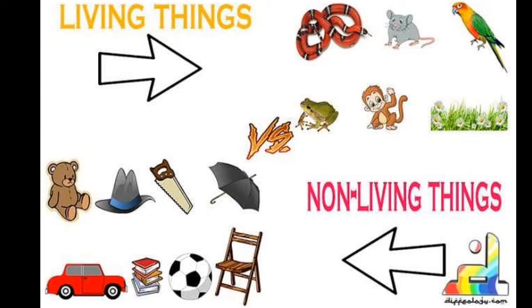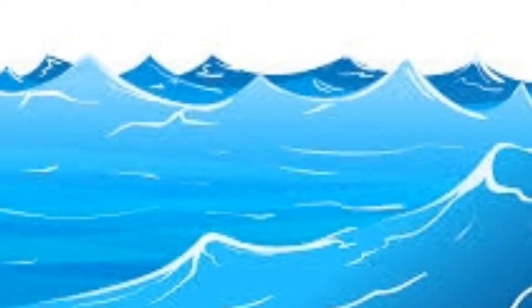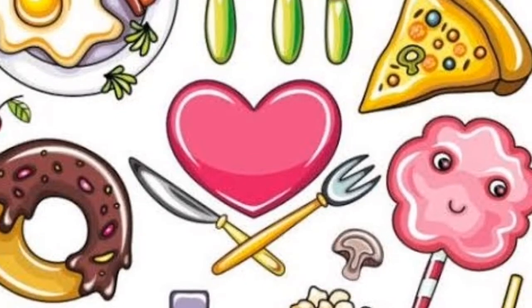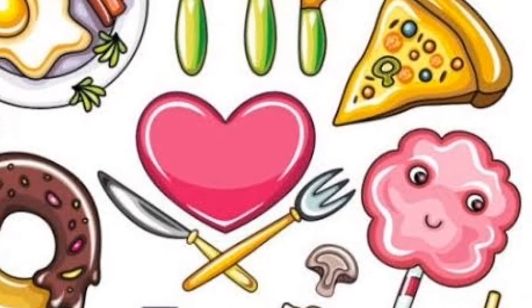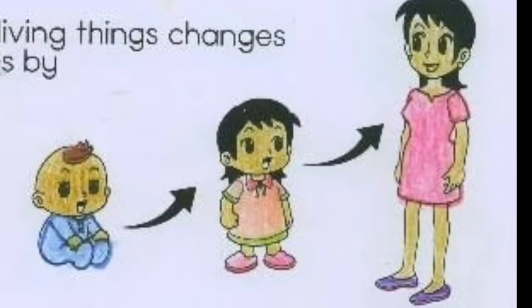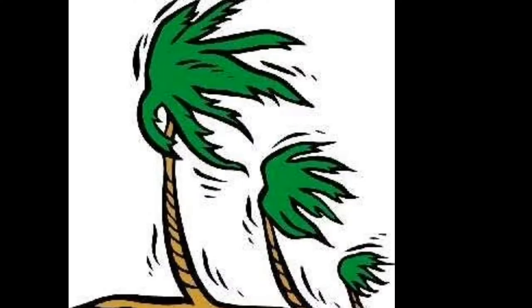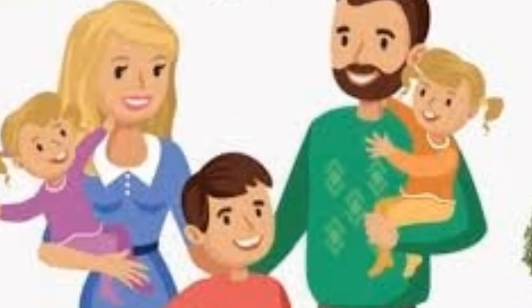Living things have some features that make them different from non-living things. Number one: living things need water, air, and food to grow. Number two: living things grow, move, and do many other activities.